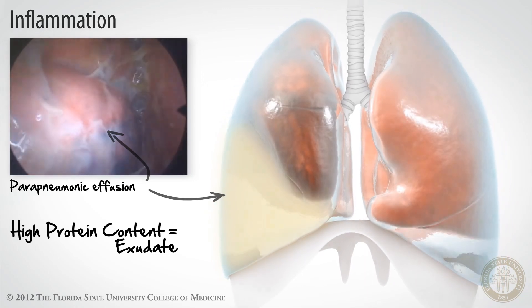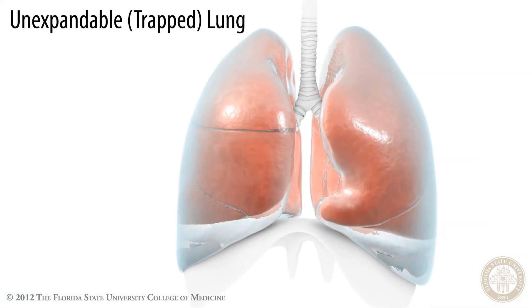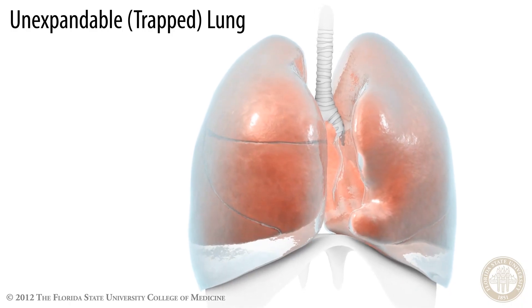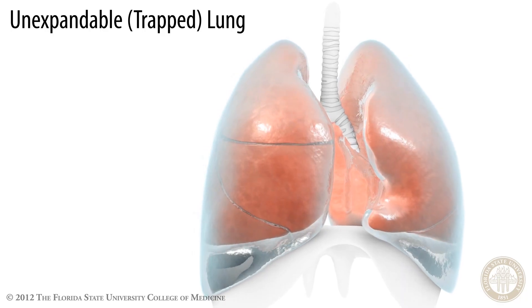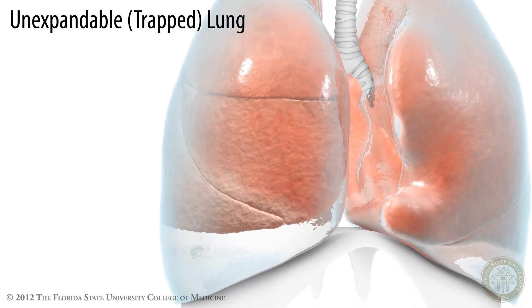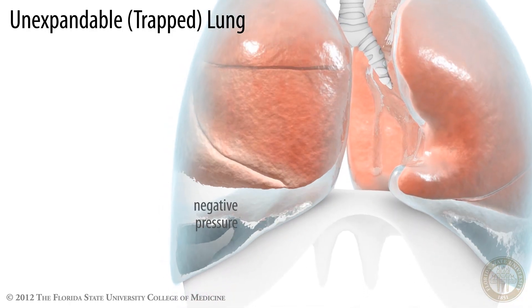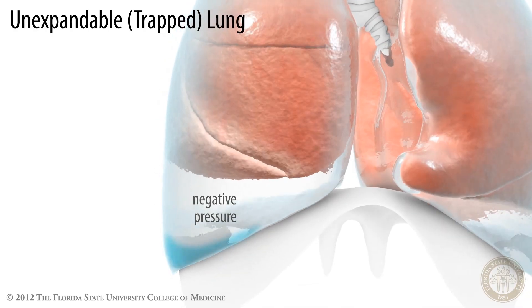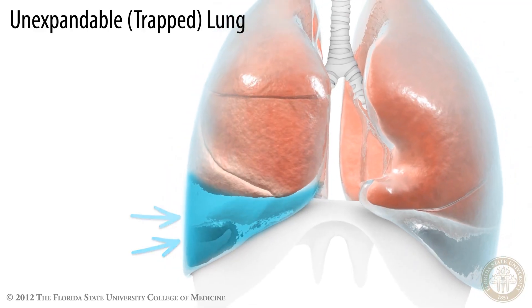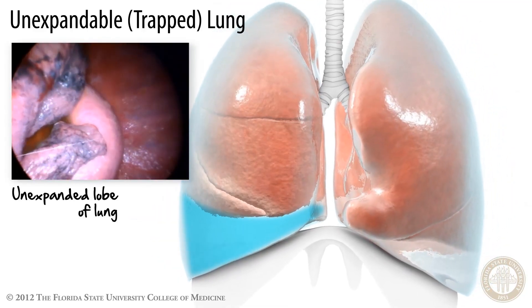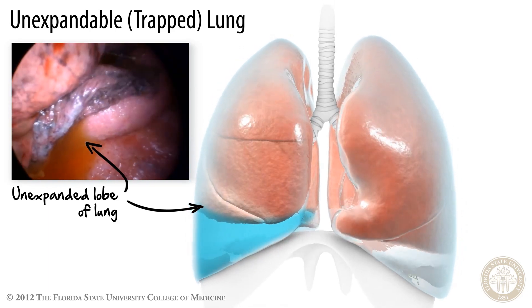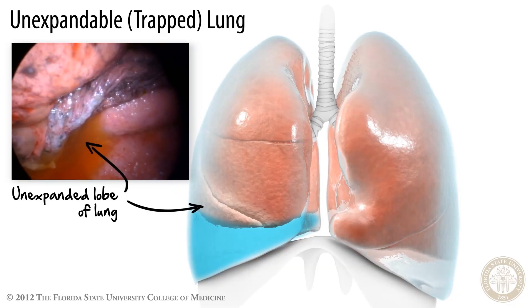You can have an effusion when there's an unexpandable or trapped lung. What is a trapped lung? Certain conditions can cause the lung to become unexpandable, in which case the lung physically pulls away from the chest wall, causing an imbalance of pressure, which favors increased filtration of fluid into the pleural space and formation of a pathologic pleural effusion. Inflammatory, infectious, or neoplastic changes can encase the lung surface, leading to a trapped lung with subsequent formation of pleural effusion.